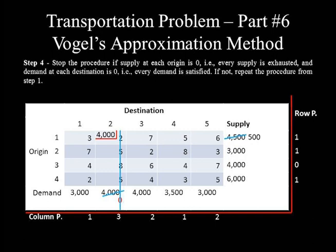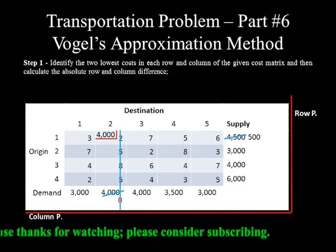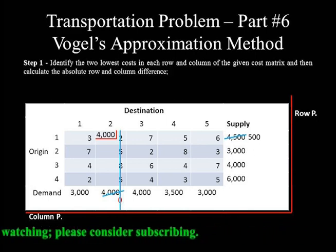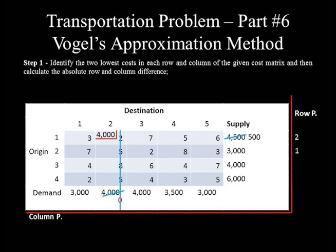Calculating updated row penalties for undeleted rows: row 1 is 5 minus 3 equals 2; row 2 is 2 and 3, difference equals 1; row 3 is 4 minus 4 equals 0; row 4 is 3 minus 2 equals 1. Column penalties: column 1 gives 1; column 3 gives 4 minus 2 equals 2; column 4 gives 3 and 4, difference equals 1; column 5 gives 3 and 5, difference equals 2. The maximum penalty is 2, and column 3, column 5, and row 1 are all tied with this maximum penalty.